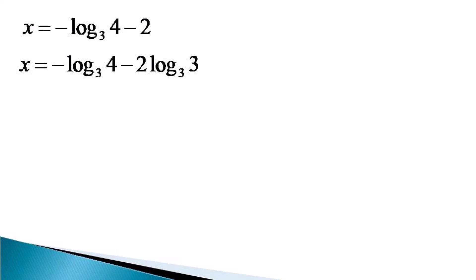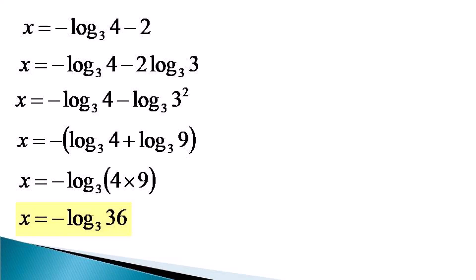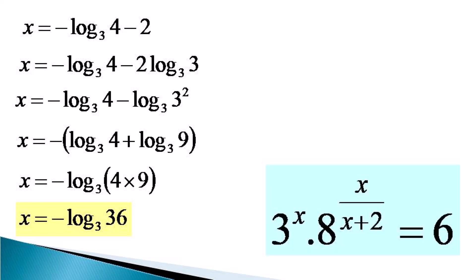So x can be written as minus log 4 to the base 3 minus 2 log 3 to the base 3. The 2 is written as 2 log 3 to the base 3, and this is further written as minus log 3 squared to the base 3, which is minus log 9 to the base 3. This makes x equal to minus log 4 to the base 3 plus log 9 to the base 3, and after using the multiplication law we get x equal to minus log of 4 times 9 to the base 3, or in very simple terms, x equals minus log 36 to the base 3.